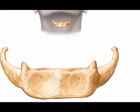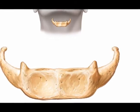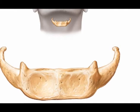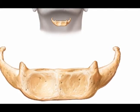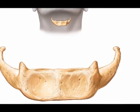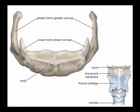The hyoid bone is a small horseshoe-shaped or U-shaped bone located in the anterior aspect of the cervical spine. It does not articulate with any other bones.